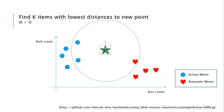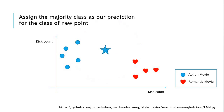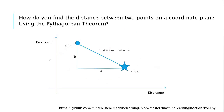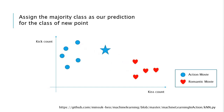So this star is close to the action movie. To find the distance in this coordinate plane, the KNN algorithm uses the Pythagorean theorem. The Pythagorean theorem states that distance squared equals a squared plus b squared. This is pretty much the KNN algorithm.